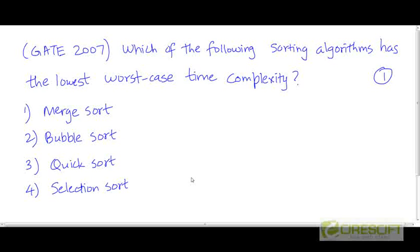This is a question from GATE 2007 for one point. Which of the following sorting algorithms has the lowest worst-case time complexity? Merge sort, bubble sort, quick sort, or selection sort?